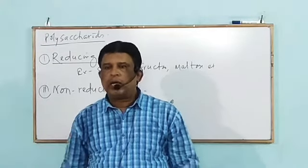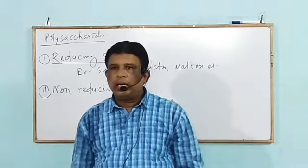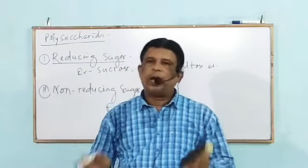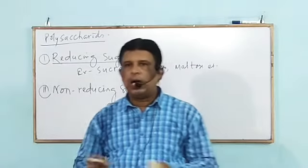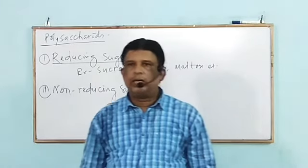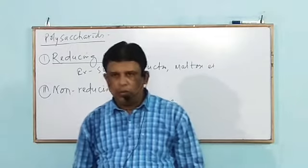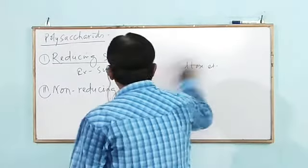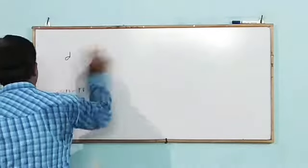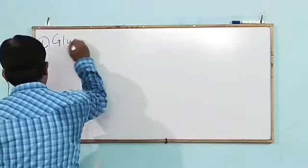Again, two more terms: if an aldehyde group is present, the monosaccharide is known as aldose; if a ketone group is present, it is known as ketose. So first we discuss about glucose.